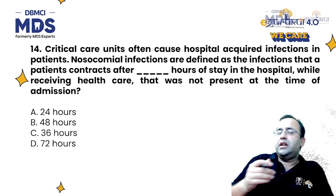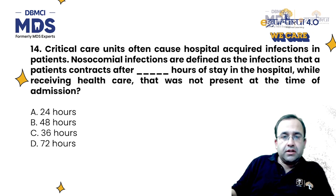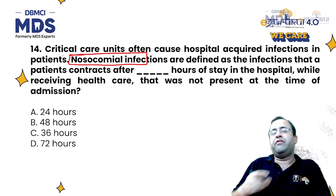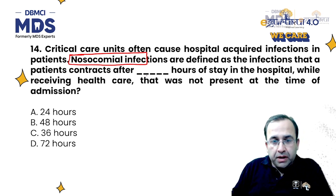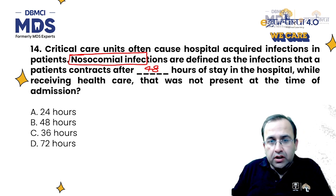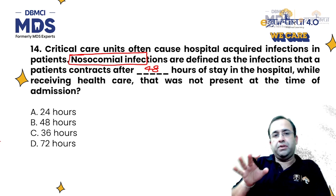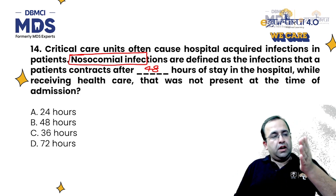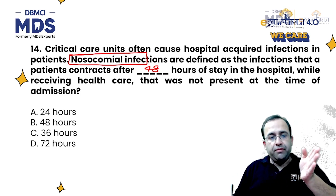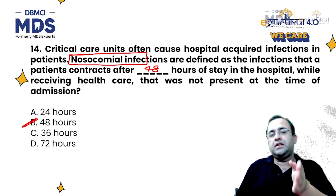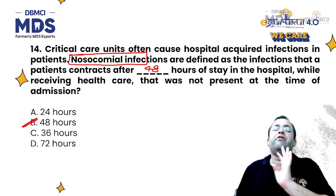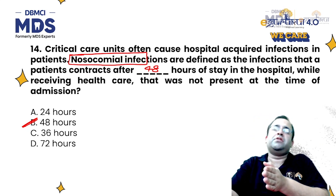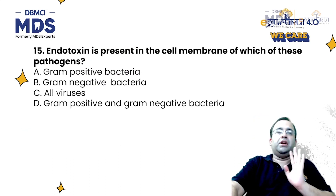This was the most recent previous year question. Critical care units are associated with hospital-acquired infections, also called nosocomial infections — defined as an infection that a patient contracts after 48 hours of stay in a hospital while receiving healthcare, and was not present at time of admission. The time period cutoff is 48 hours of hospital stay.